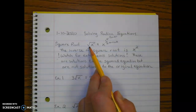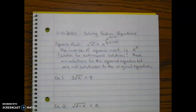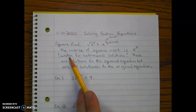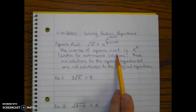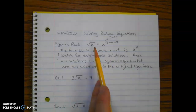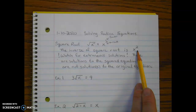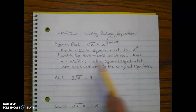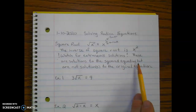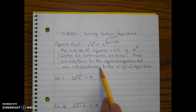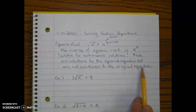Once you solve for x, watch out for extraneous solutions. When we convert from a square root to a squared equation, remember that a squared equation can have two solutions — and it's possible that some solutions work for the squared equation but are not solutions to the original equation.